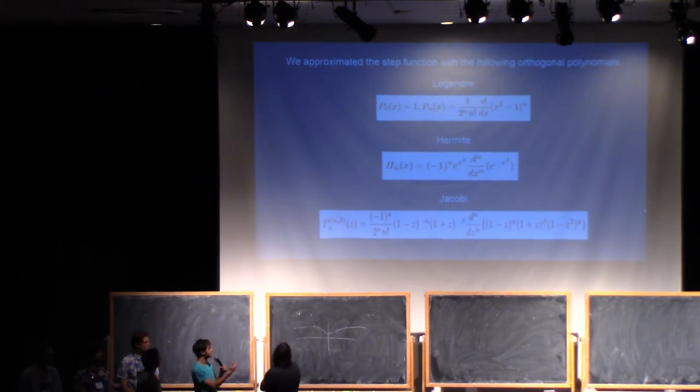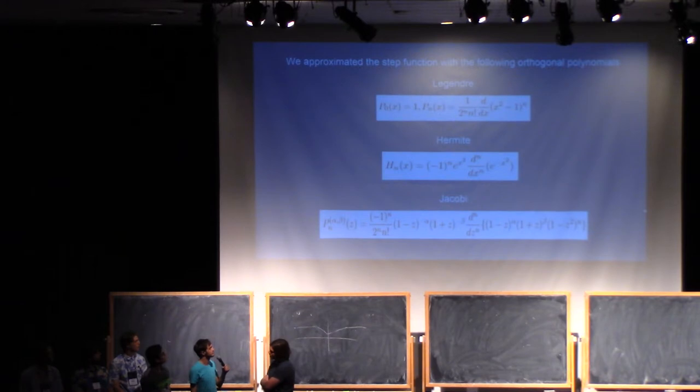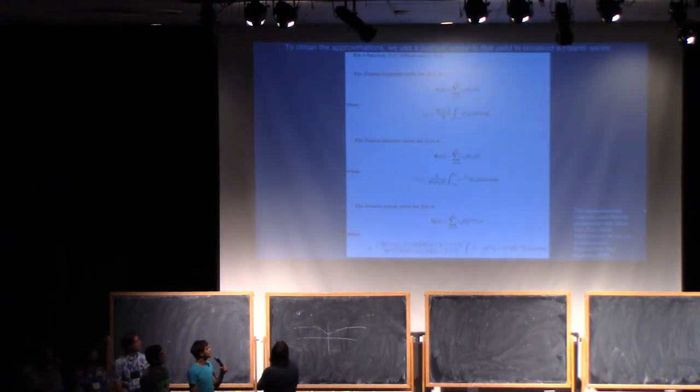And the reason that these are important is because when you're trying to figure out what the constants of your approximation need to be, you're taking an inner product with respect to a weight function. And the Rodriguez formulas all have the weight functions for these respective polynomials contained within the formulas.